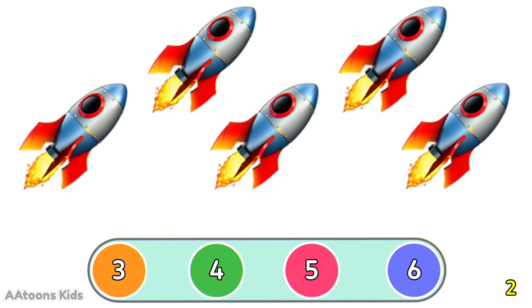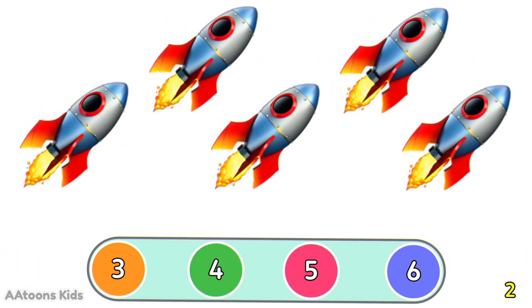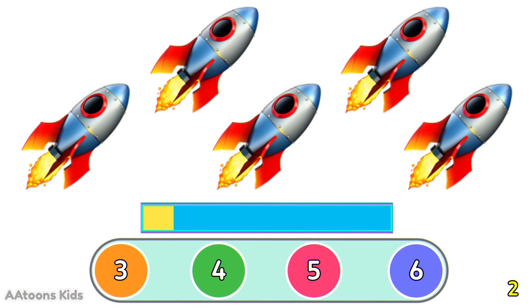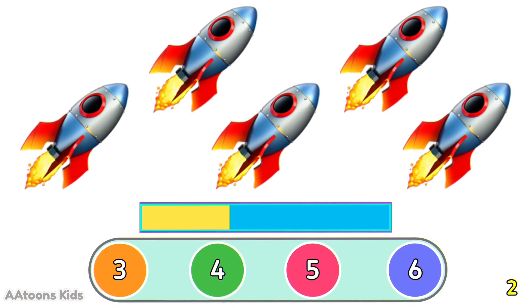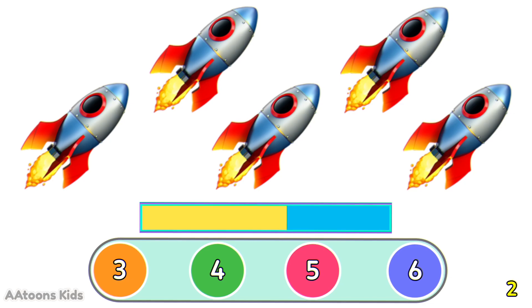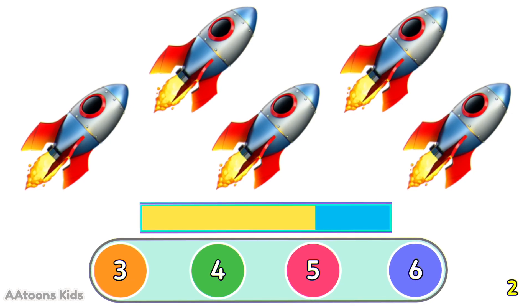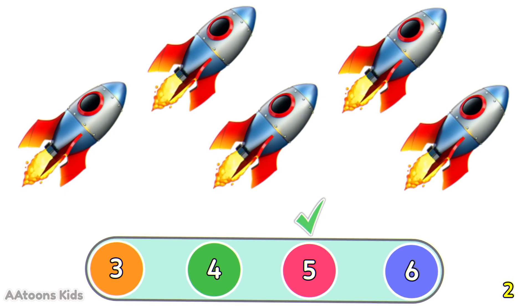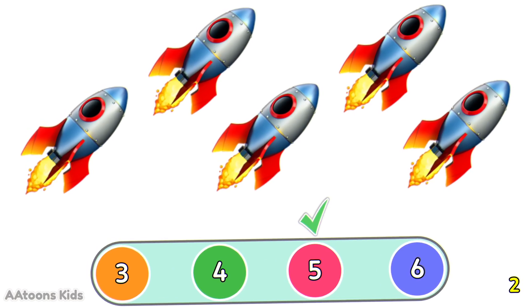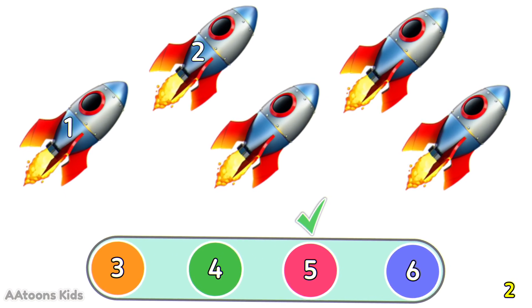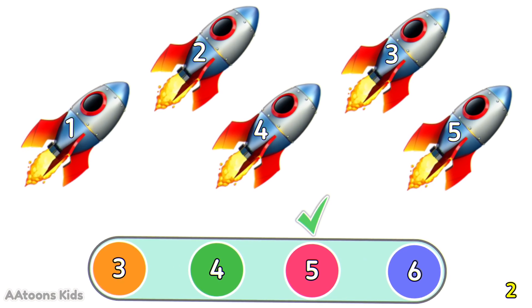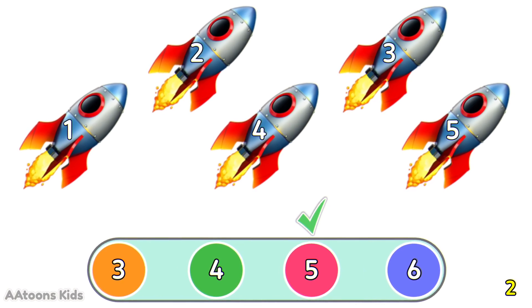Can you count how many rockets are in the picture? 5 rockets. Let's count them: 1, 2, 3, 4, 5. 5 rockets.